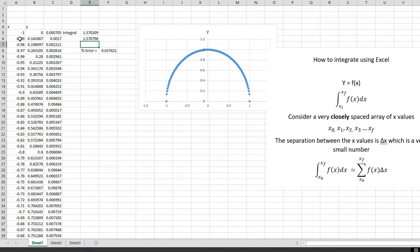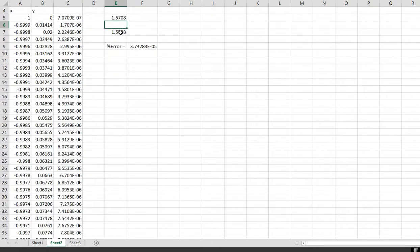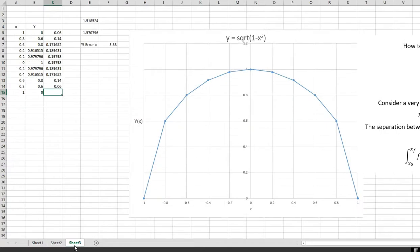Now, let's see what happens when we make the spacing smaller. Here I made the spacing 0.0001. And now, this is my value for the integral, the sum of everything in that column. And this is pi over 2.